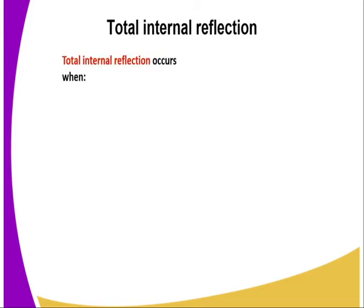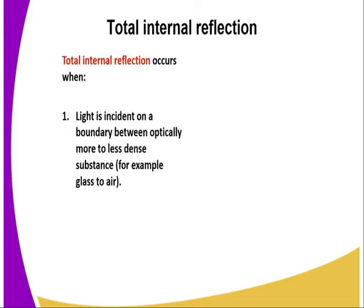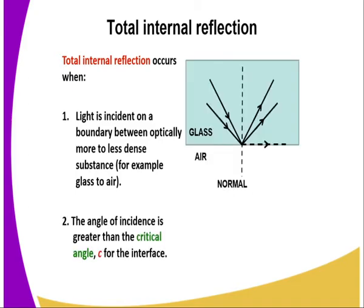What is total internal reflection? Total internal reflection occurs when light is incident on a boundary between optically more or less dense substances, for example glass to air, and the angle of incidence is greater than the critical angle C for the interface. We have defined critical angle, and we know that this is the angle of incidence in the denser medium for which the angle of refraction is 90 degrees. If these two conditions apply, then total internal reflection occurs.